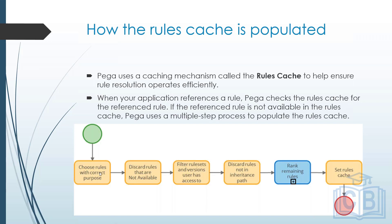The first step is: choose rules with the correct purpose. The purpose here means the name of the rule, the rule type, the class, and the version. The system chooses all rules matching the correct purpose. Then the second step is discarding rules that are not available — once you have a list from step one, the system begins eliminating rules.